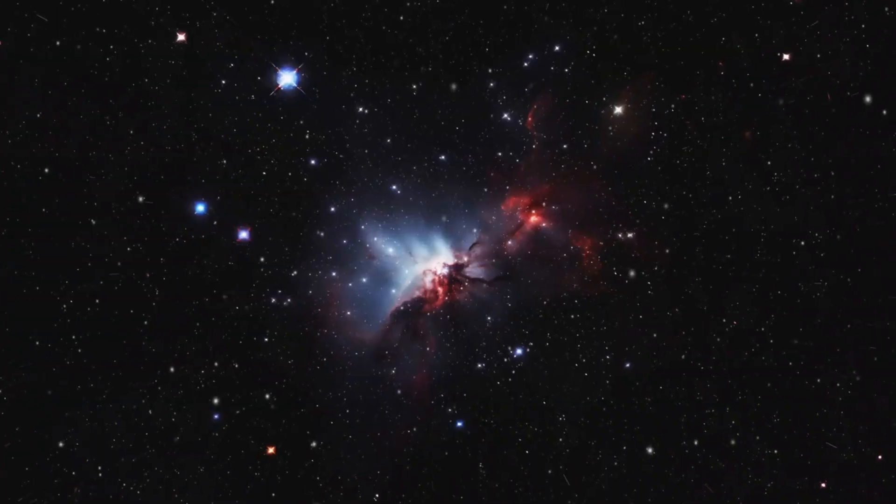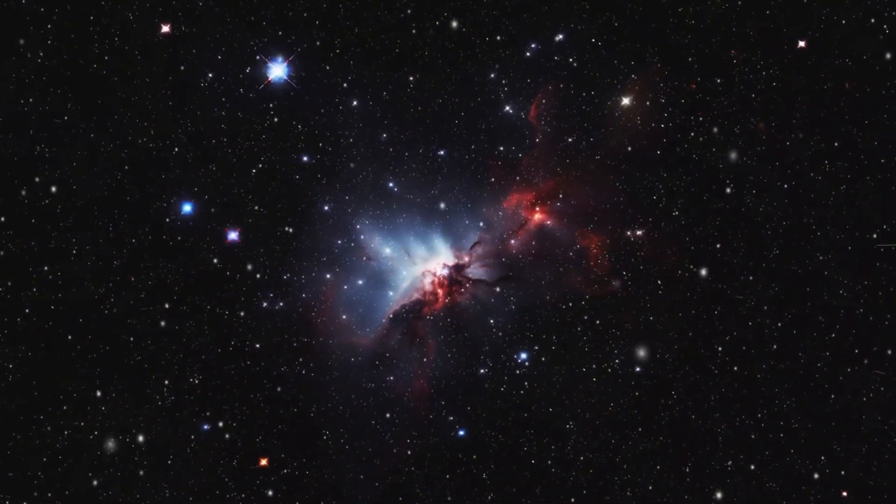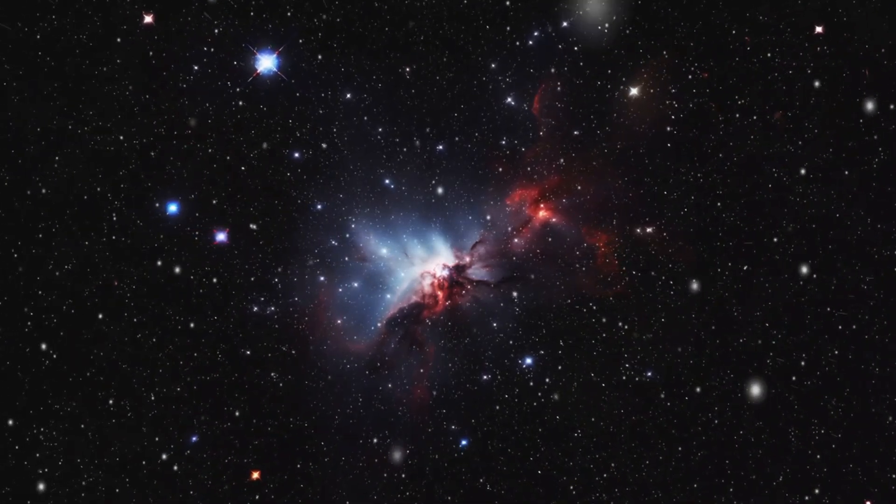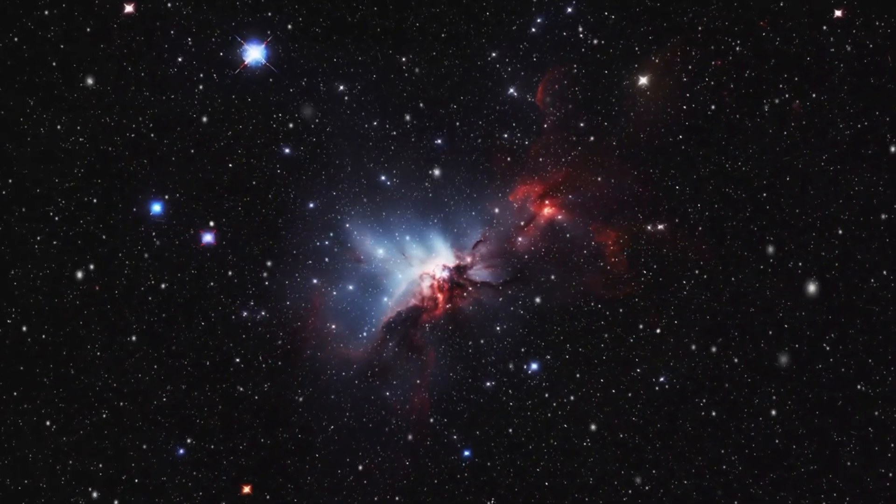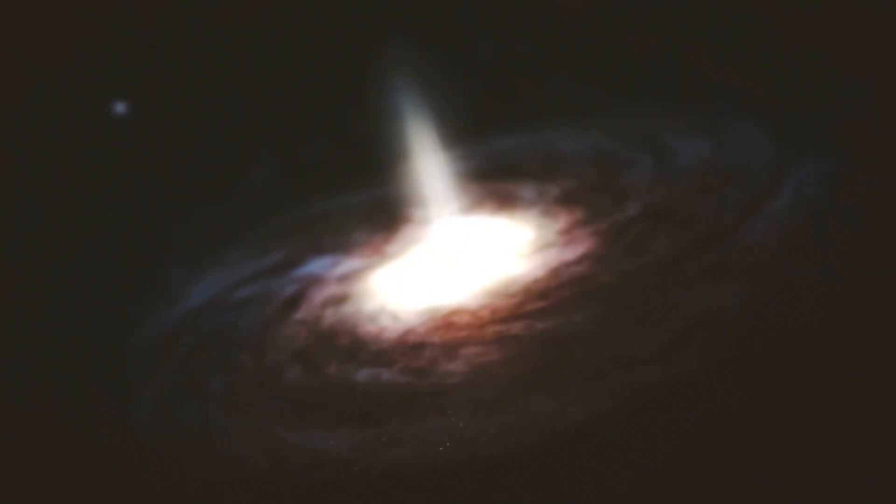As of April 1, 2024, there are 5,653 confirmed exoplanets in 4,161 planetary systems. Of these, 896 systems have more than one planet.